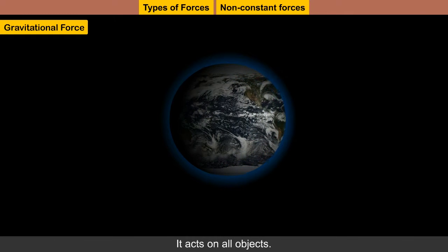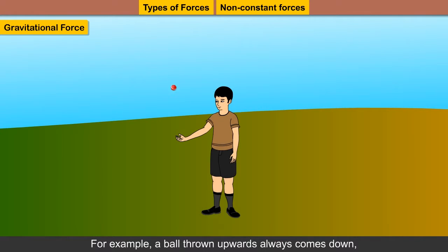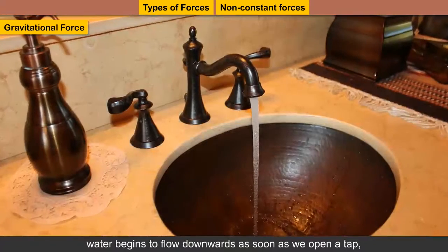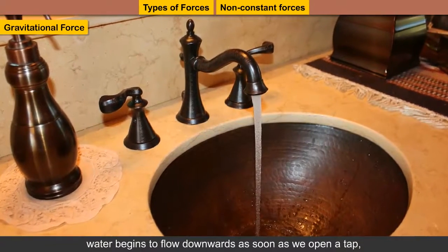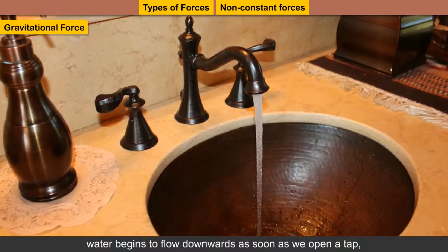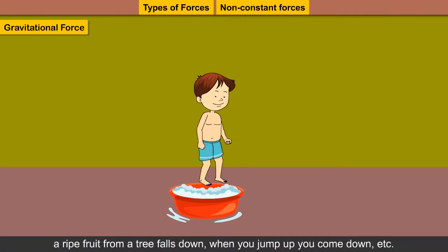Gravity acts on all objects. For example, a ball thrown upwards always comes down. Water begins to flow downwards as soon as we open a tap. A ripe fruit from a tree falls down. When you jump up, you come down, etc.